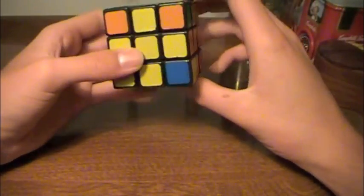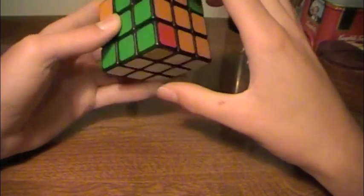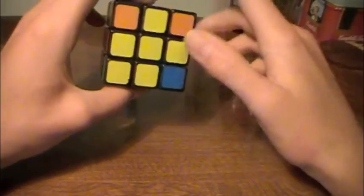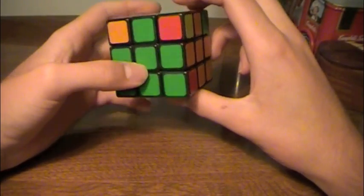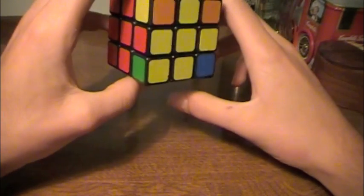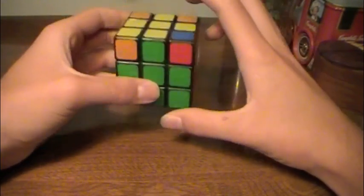From here, you have five corners, probably. You might have gotten lucky, but you probably have five corners that are not solved. And so what you're going to do is solve them with commutators.